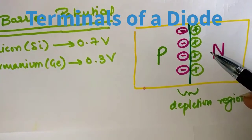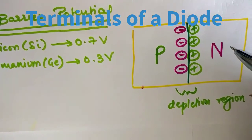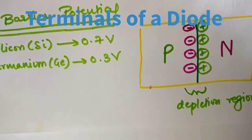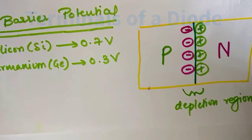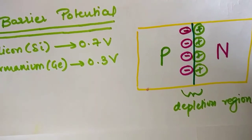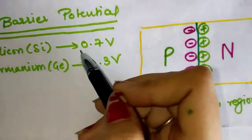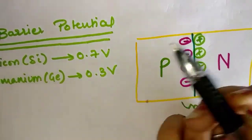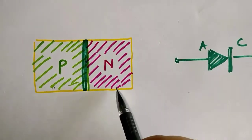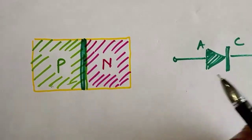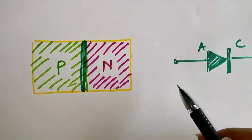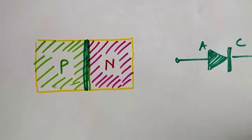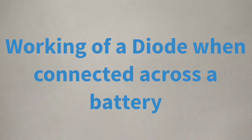Due to these charges, a static electric field is generated, which is known as barrier potential. Barrier potential is the minimum voltage required to overcome or cross the depletion region. For silicon it is 0.7 volts, and for germanium it is 0.3 volts. The p-type acts as the anode and the n-type acts as the cathode. This is the symbol for the diode — this is the anode and this is the cathode.